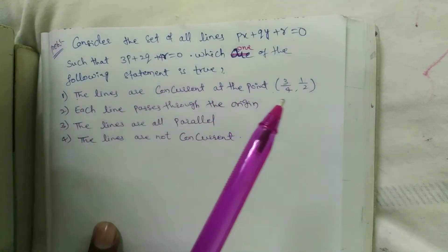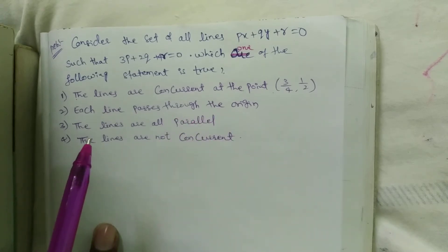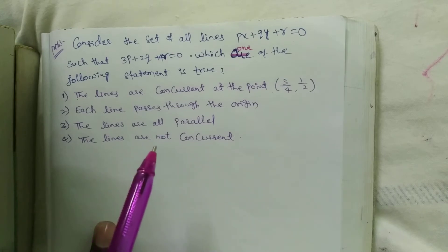The lines are concurrent at the point 3 by 4 comma 1 by 2. Each line passes through the origin. Third one is that the lines are all parallel. The lines are not concurrent.